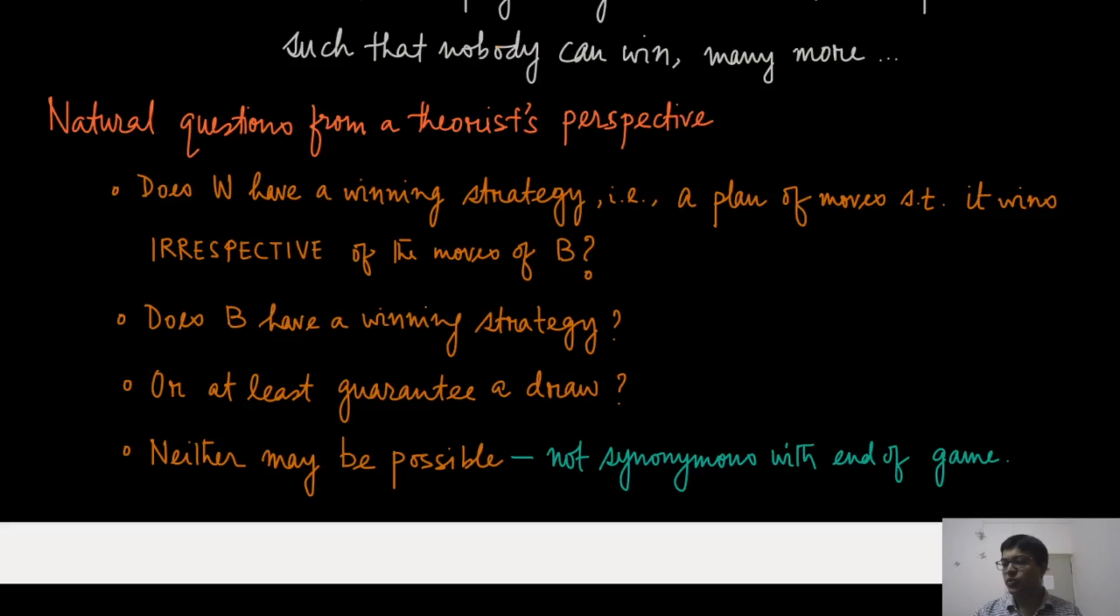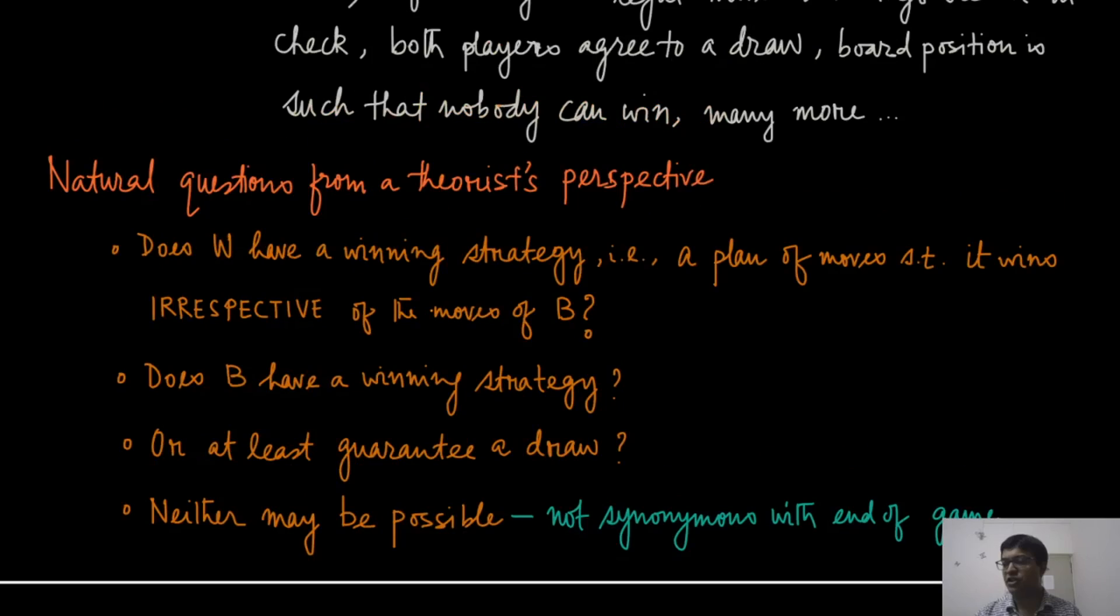Now the natural question that we will be asking from a game theorist's point of view is that in this kind of a setting, does the white player have a winning strategy? What do we mean by winning strategy? It means that it is a plan of all the moves such that the player, that player in this case is white, wins irrespective of what is the move of the other player. So no matter whatever action has been chosen by player B, white player is always going to win.